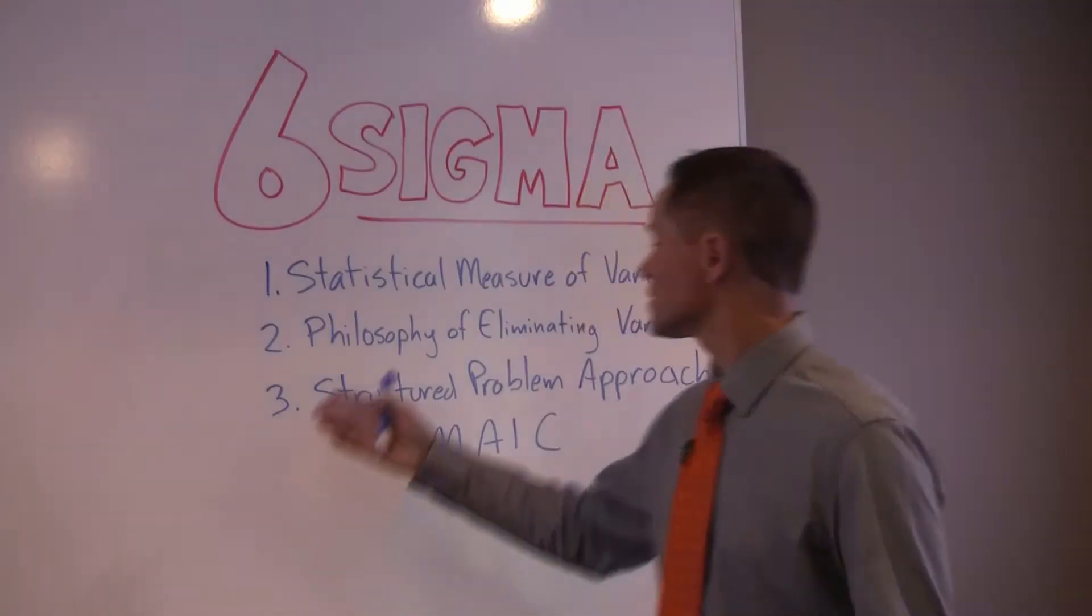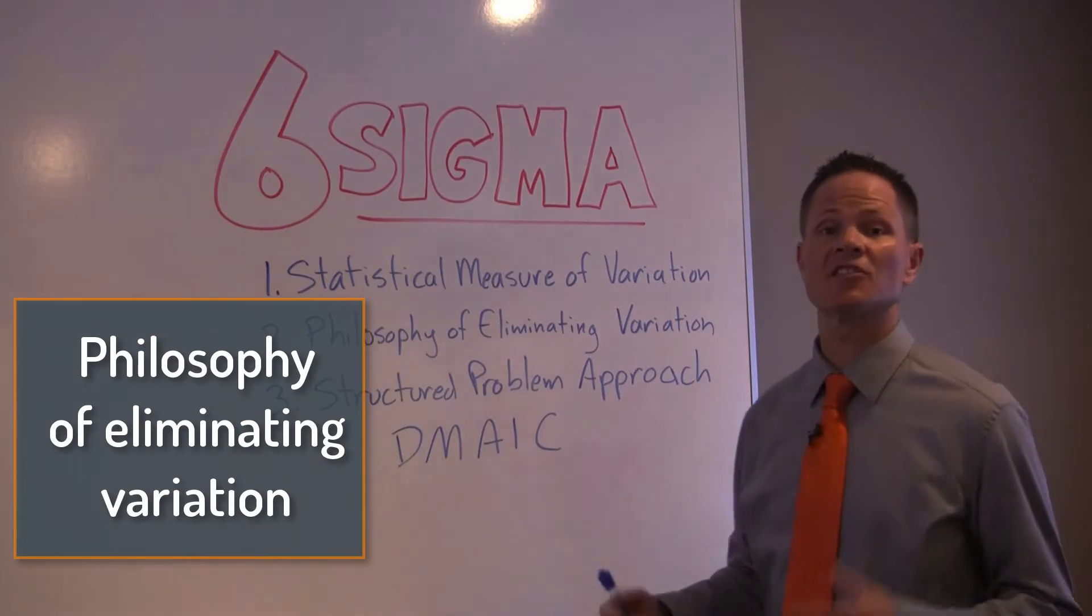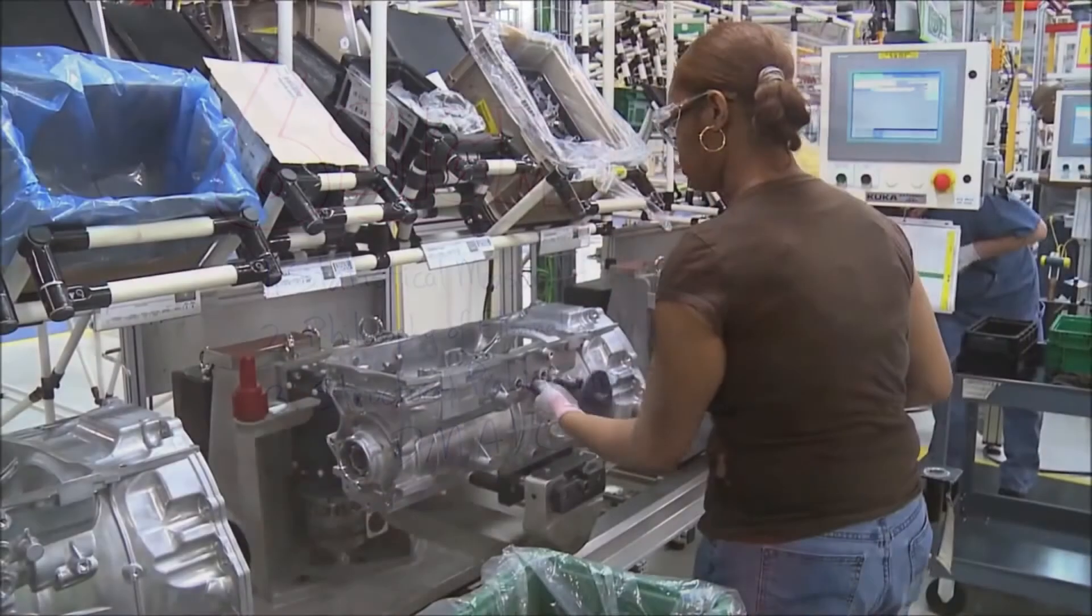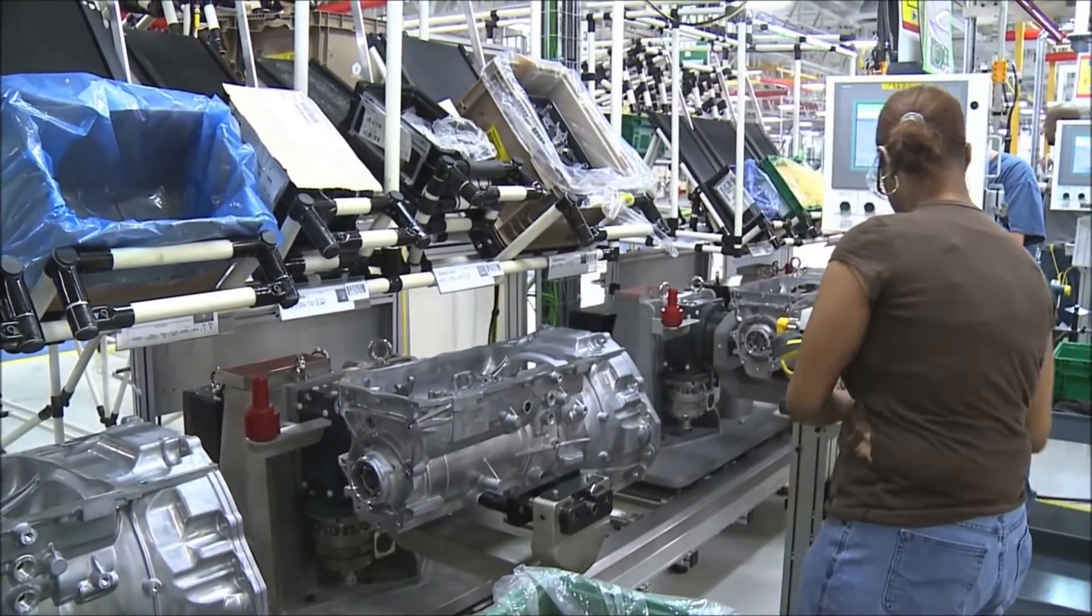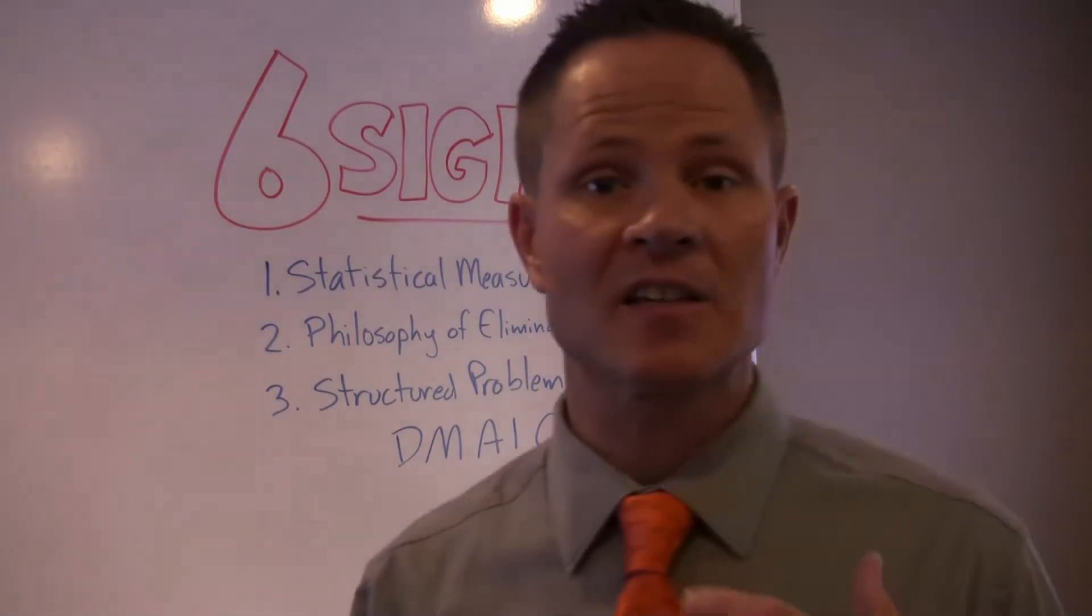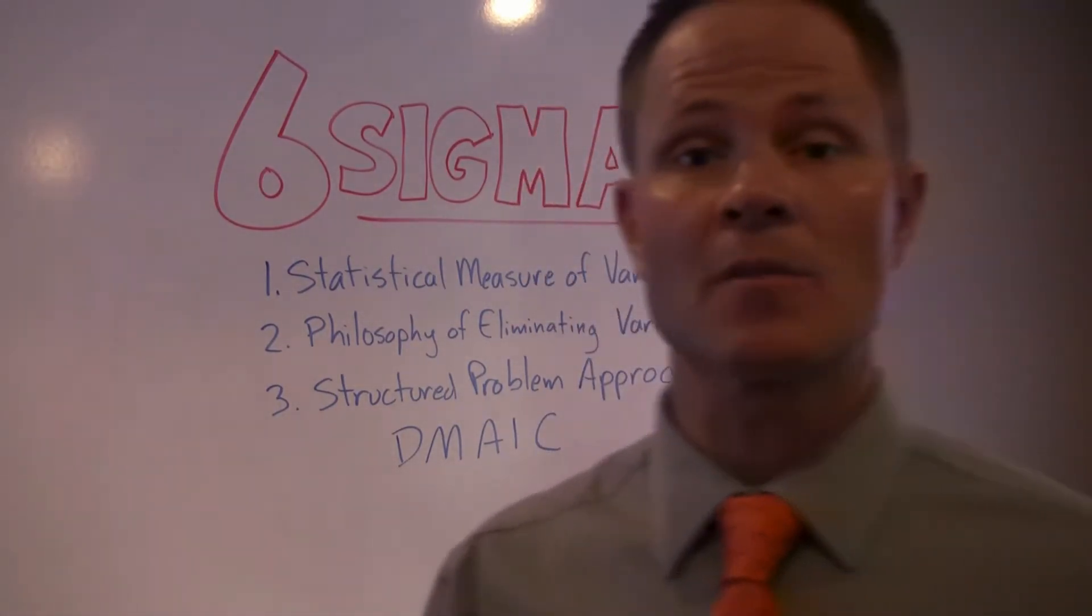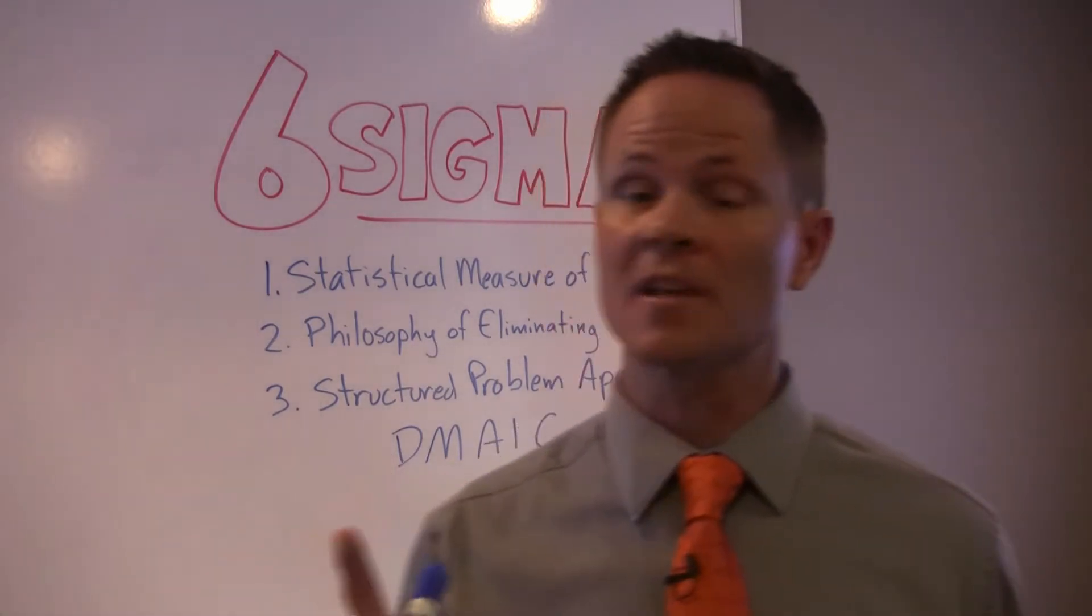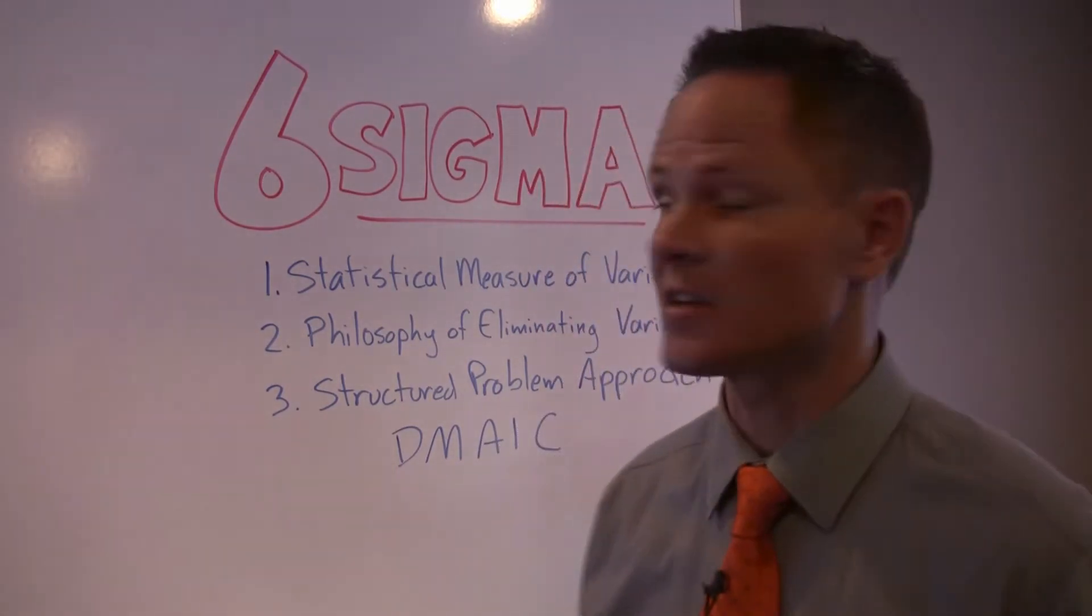The second thing is it's a philosophy of eliminating the sources of variation. For example, let's say you're producing parts on a production line and you have a yield of 90%, which means one out of every 10 is failing. You can find out what's actually causing that variation in your process, because sometimes your process works 9 out of 10 times. One time out of 10 it doesn't, and that's caused by a source of variation.